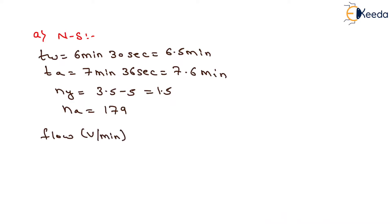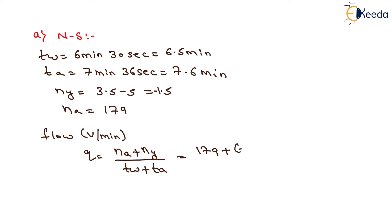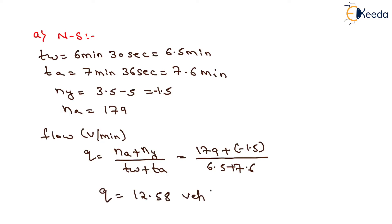Now we have to determine the flow in terms of vehicles per minute. Q equals NA plus NY upon TW plus TA. Putting NA as 179, NY as minus 1.5, TW as 6.5 and TA as 7.6, Q comes out as 12.58 vehicles per minute.